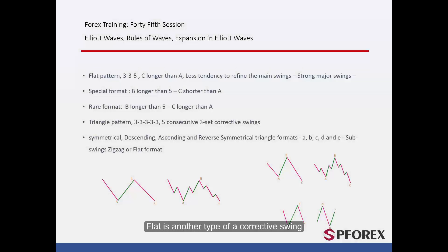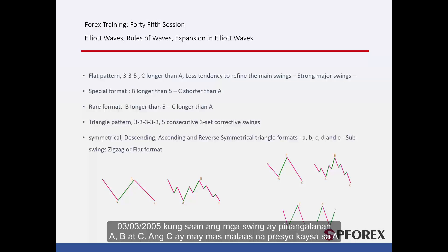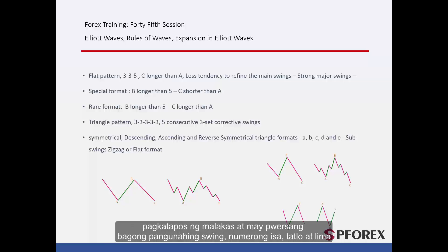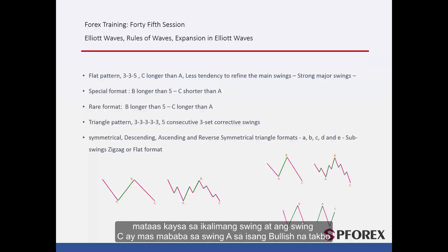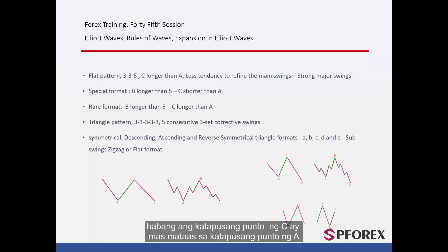Flat is another type of corrective swing (3-3-5), in which swings are named A, B and C. C has a higher price than A, which shows less tendency to refine the main swings. Frequently, this type appears after strong and vigorous latest major swings — numbers 1, 3 and 5. A special type of flat format is formed after swing B closes higher than the fifth swing and swing C is lower than swing A in a bullish trend. In rare conditions, B may close over the fifth swing while the C endpoint is higher than the A endpoint.